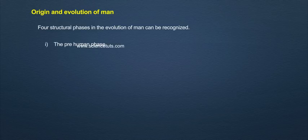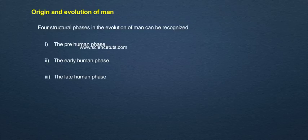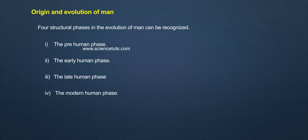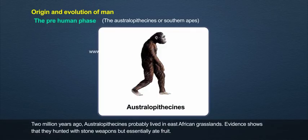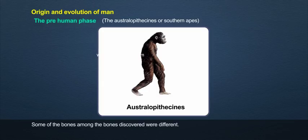The four phases are: 1. The pre-human phase, 2. The early human phase, 3. The late human phase, and 4. The modern human phase. The Australopithecines, or southern apes, lived about 2 million years ago, probably in East African grasslands. Evidence shows that they hunted with stone weapons but essentially ate fruits.